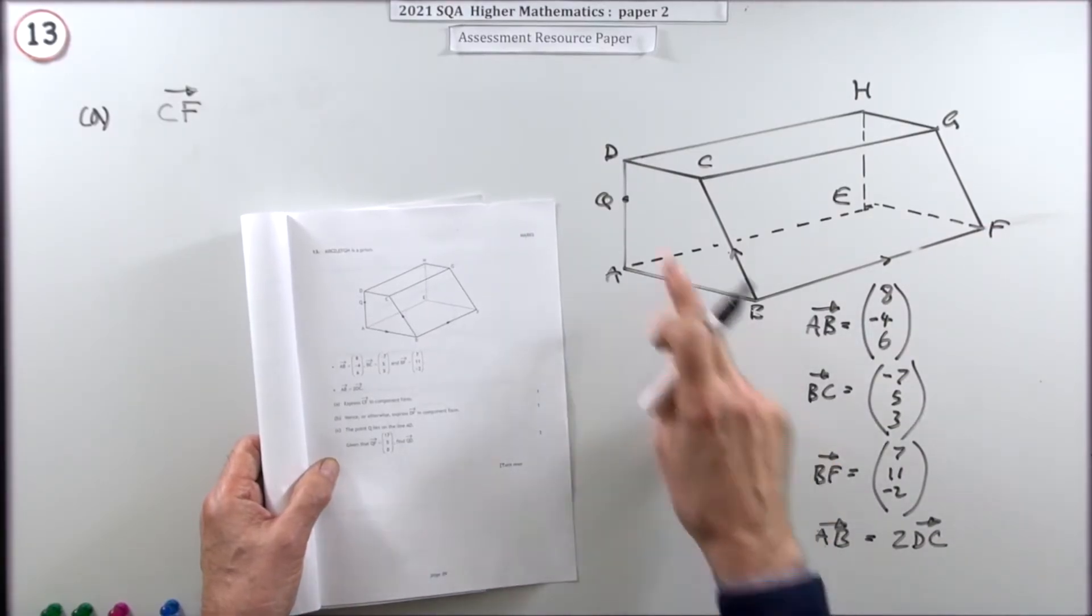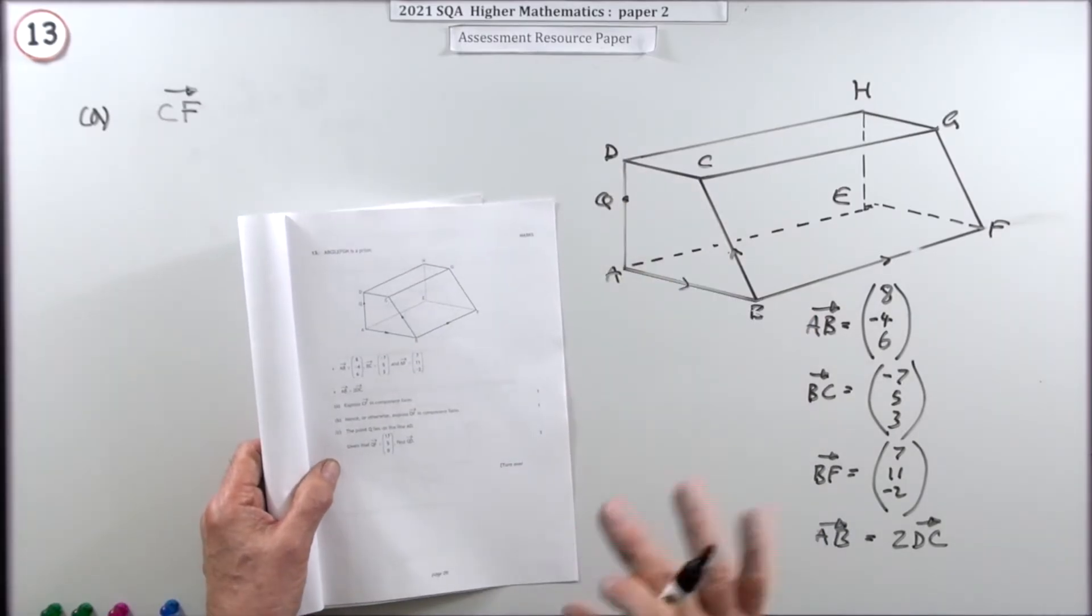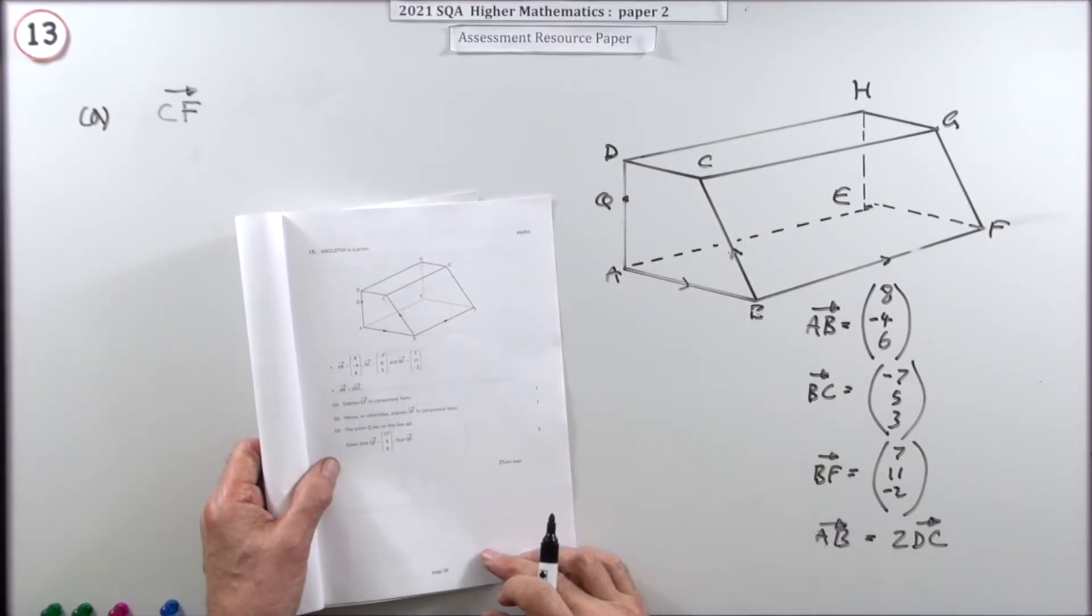And it also tells you that A, B is twice D, C. That move is twice that move. And from that, they're just looking for various, the components of various other vectors, other displacements.